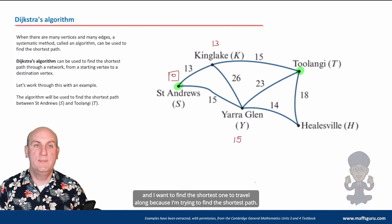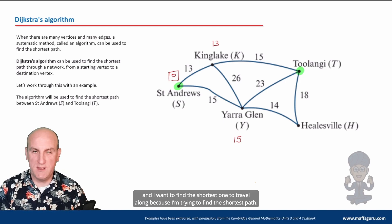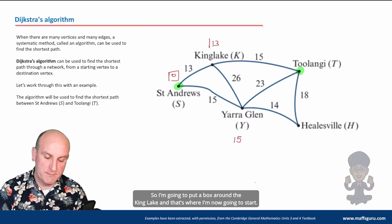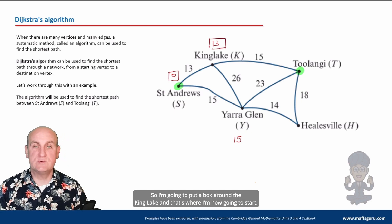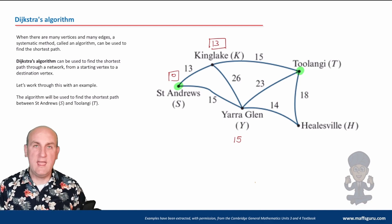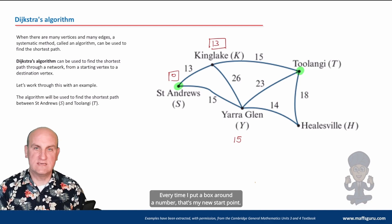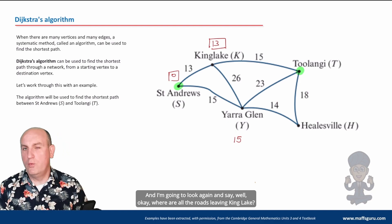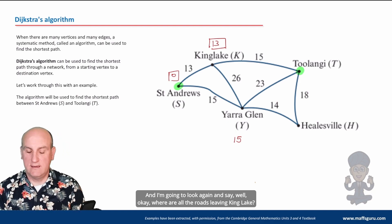Now I've exhausted all the roads I can leave on St Andrews and I want to find the shortest one to travel along because I'm trying to find the shortest path. Well okay, it would appear I can go to Kinglake in 13, so I'm going to put a box around the Kinglake, and that's where I'm now going to start. Right, every time I put a box around a number, that's my new start point.